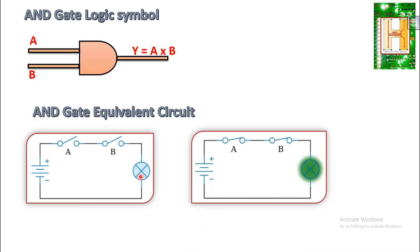In the second diagram, the output lamp is turned on when both A and B inputs are closed. From this we can conclude that when the inputs of the AND gate, A and B, are both logic one, then only the output of the AND gate is going to be logic one.